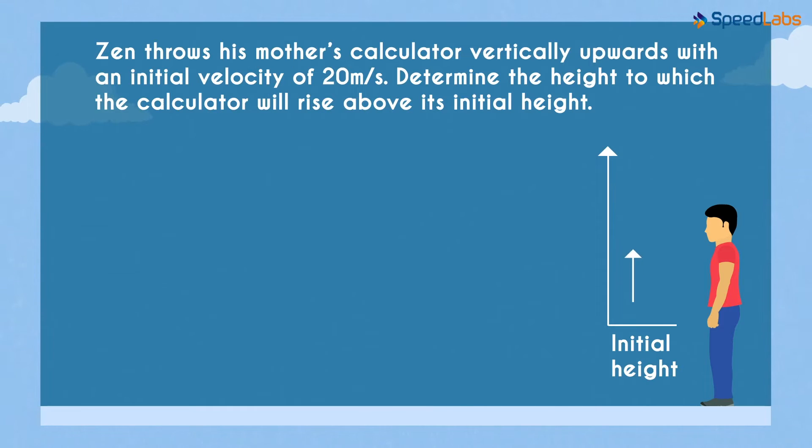The initial velocity u is given to us as 20 meters per second. That's the velocity at which Zen throws the calculator upwards.